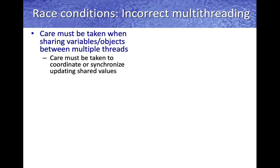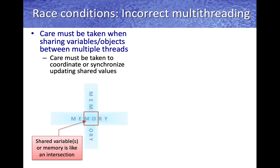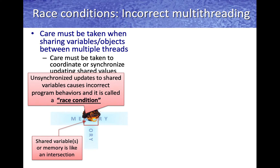Care must be taken when sharing variables or objects between multiple threads. It is important to ensure that we coordinate or synchronize updates to shared values from multiple threads. Consider an intersection — it represents a shared variable or memory location being shared and updated by multiple threads. If two threads simultaneously enter the intersection and try to update the variable, this causes incorrect program behavior. Such unsynchronized updates to shared variables cause incorrect program operations, and this scenario is called a race condition.